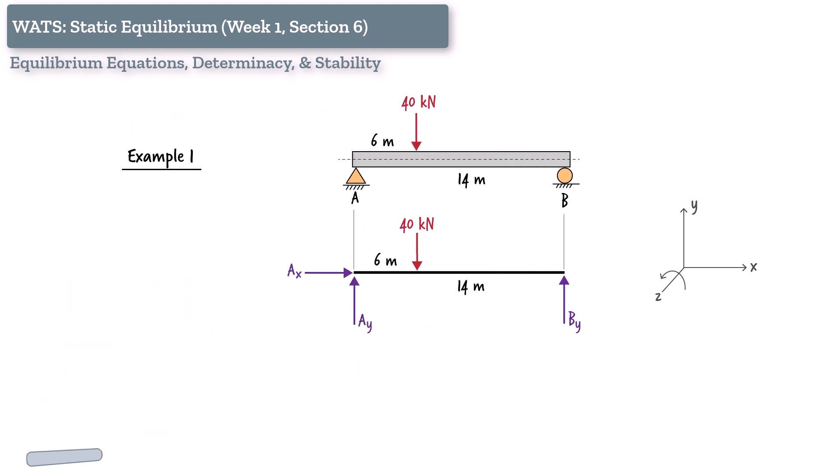Example 1. Pin and roller. We have a beam supported by a pin at one end and a roller at the other. The pin provides two reactions, one horizontal and one vertical. The roller provides one vertical reaction. That's a total of three unknowns.